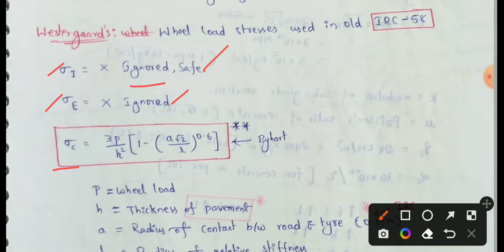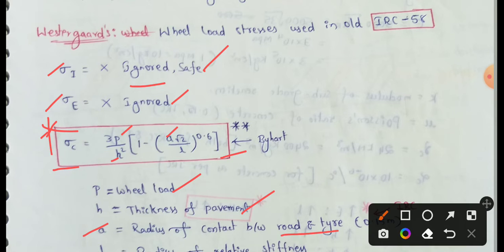This is the design of the pavement. This is the formula in the corner loading — a very important formula. In the next video, we will discuss some examples of this formula. First, we will go through the variables: P means Wheel Load, H means Thickness of Payment — thickness of road. Next, A means Radius of Contact between Road and Tire.